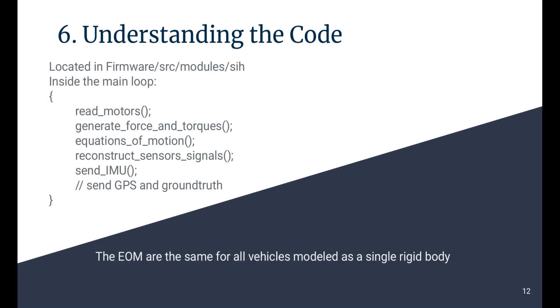Great! Now that you know how to use the SIH, let's have a look at the code and modify it. At every iteration, the main loop will start by reading the motors, or more generally the actuators. It will then generate the forces and torques based on the geometry of the vehicle. Then the equations of motion of a rigid body are applied. These equations are the same for all vehicles modeled as a single rigid body. The SIH finally reconstructs the sensor signals, corrupts them with noise, and sends the IMU signals. The ground-truth signals, which are used for the display in JMAFSIM, and the GPS signals are sent at a lower rate.